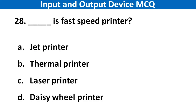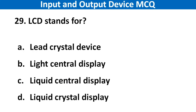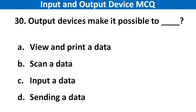Next question: Which is a fast speed printer? Right answer is option C: Laser printer. Next question: LCD stands for. Right answer is option D: Liquid Crystal Display. Next question: Output device makes it possible to do what? Right answer is option A: View and print data.